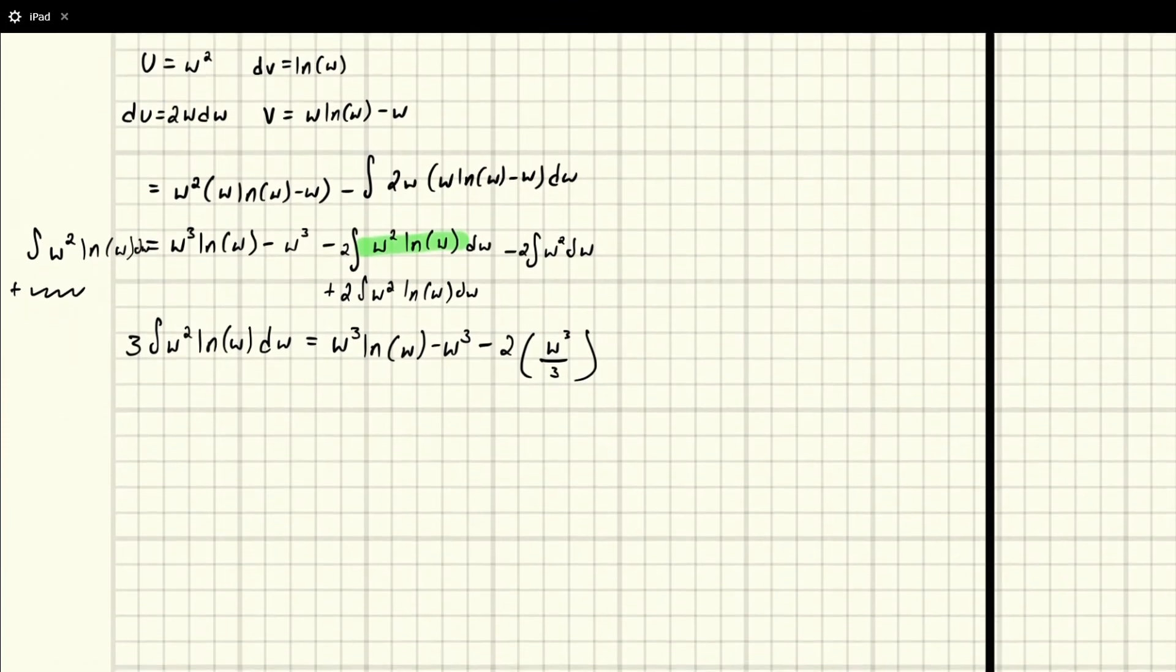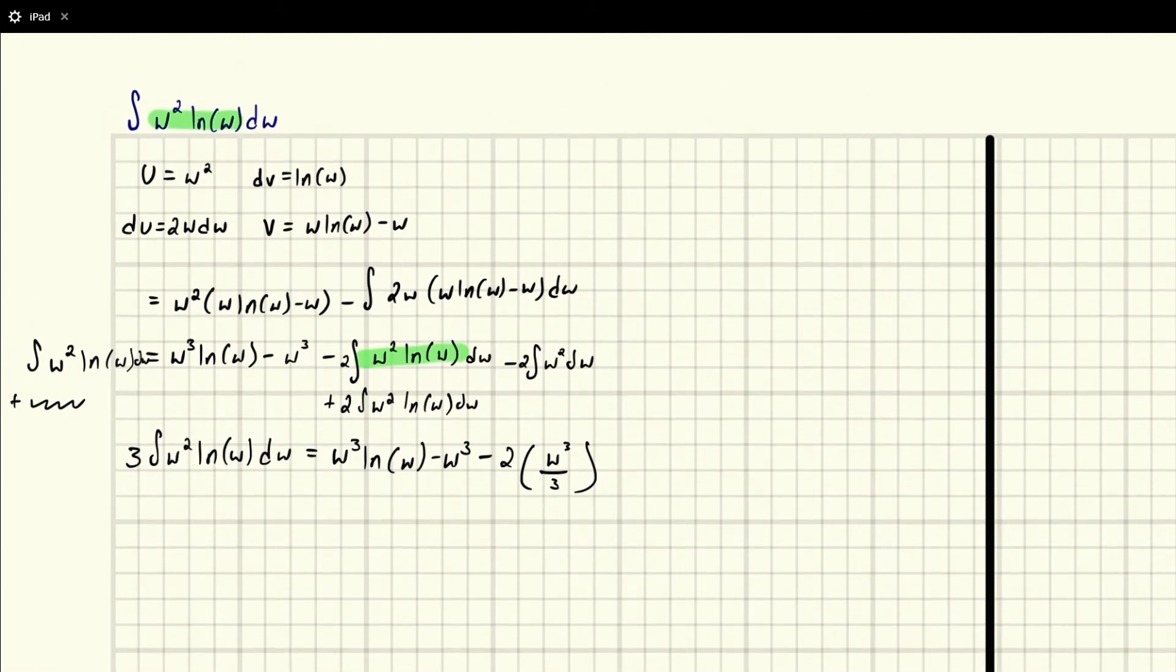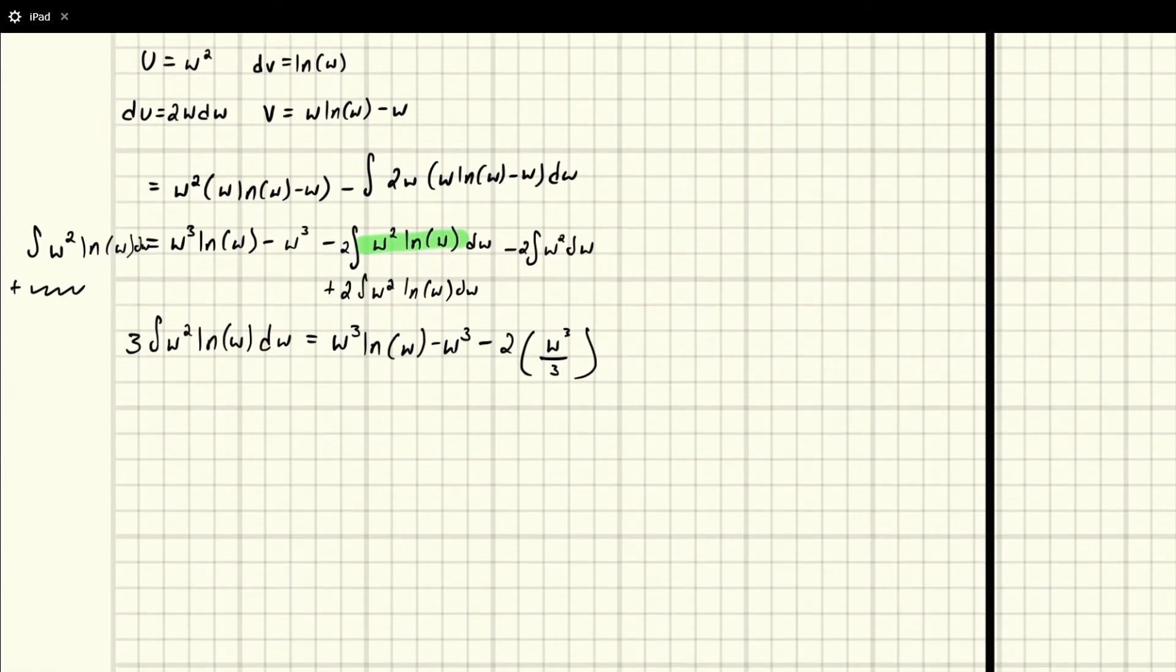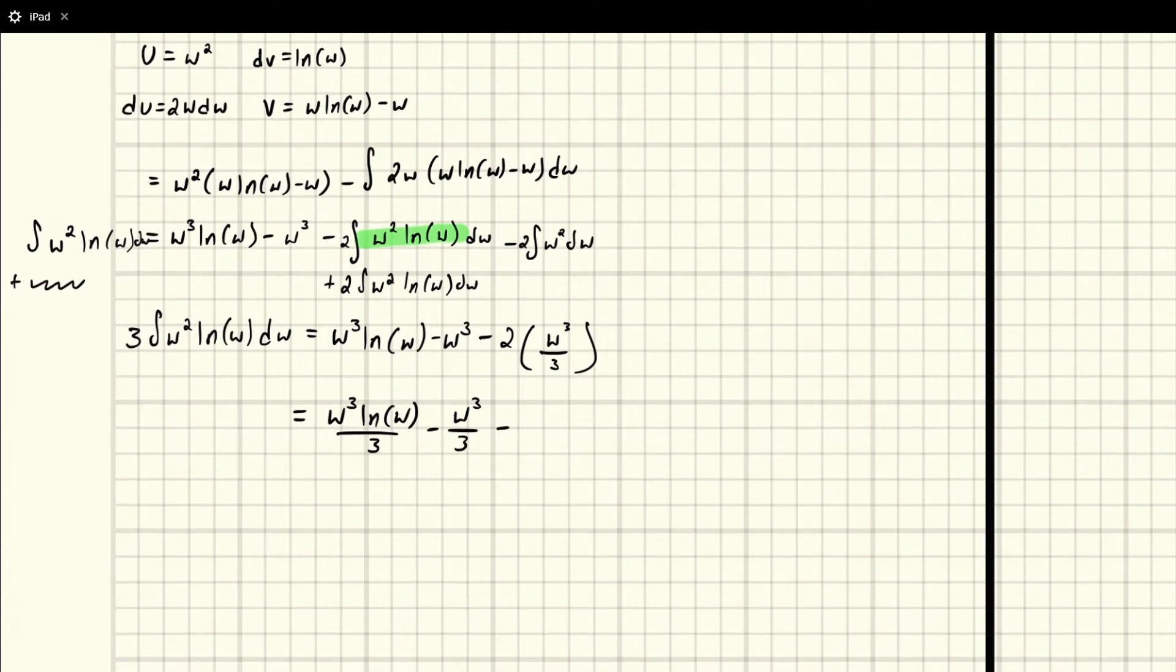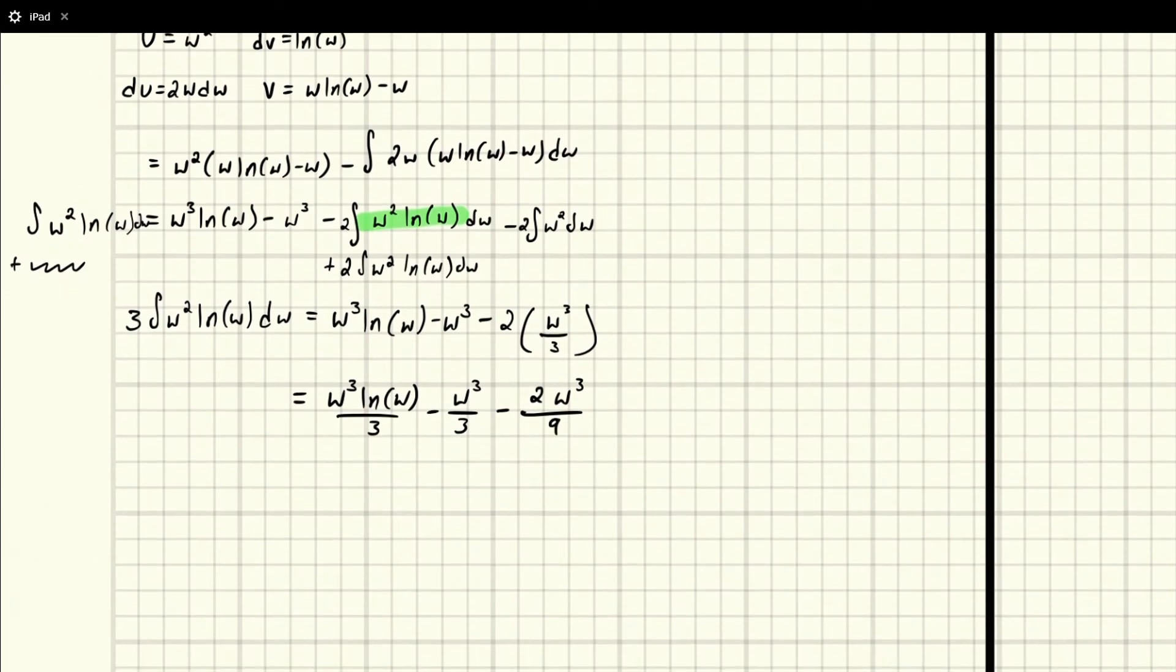And then we just divide everything by 3 and we'll have solved for the integral we were looking for in the first place. So when we divide by 3, I'm just going to write equals here. We're going to get w cubed ln w over 3 minus w cubed over 3 minus, and this is going to be 2w cubed over, and then this 3 times this 3 will multiply, we'll get 9. And this will be our final result.